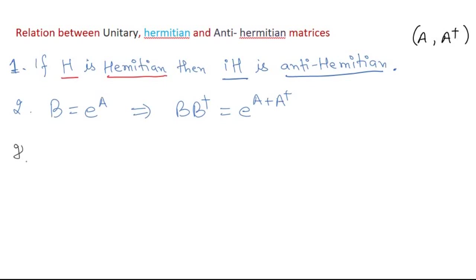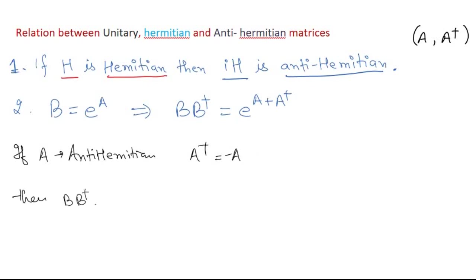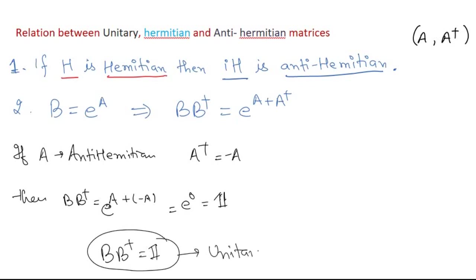Now let us apply a condition: if A is anti-hermitian, what happens? If A is anti-hermitian, then A† = −A. Then B·B† = e^(A + A†) = e^(A + (−A)) = e^(null) = e^0 = I, the identity. B·B† = I means B is a unitary matrix. So a unitary matrix is related to the exponential of an anti-hermitian matrix.